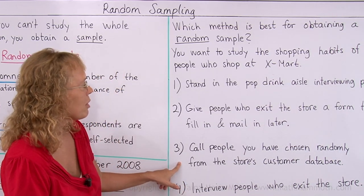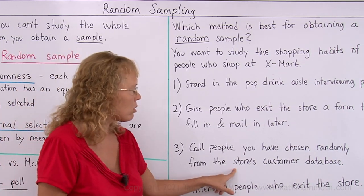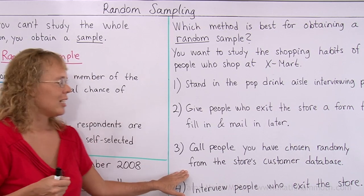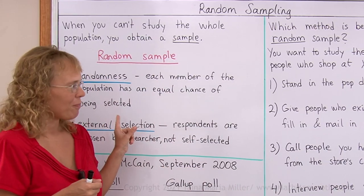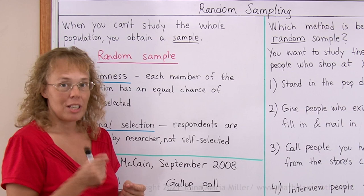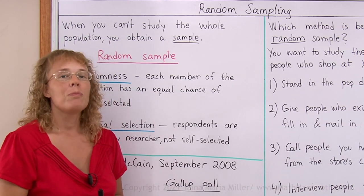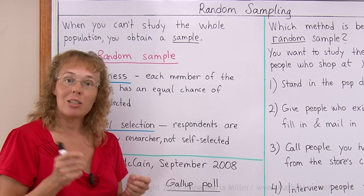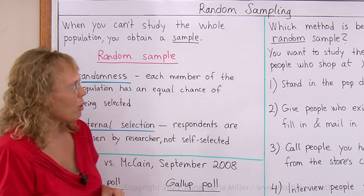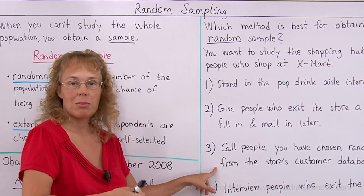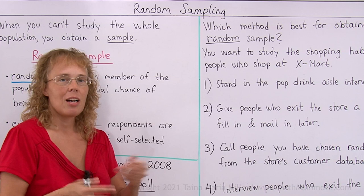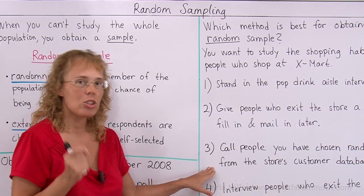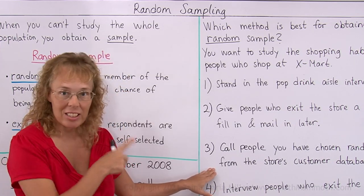Method three: call people you have chosen randomly from the store's customer database. This is the method that most closely resembles a true random sample. You do the choosing, and you randomly select from the database. As long as all the shoppers are in the database, all shoppers have an equal chance of being selected. It's possible some customers are not in the database, so even this might not be truly random, but it is the best of these methods.